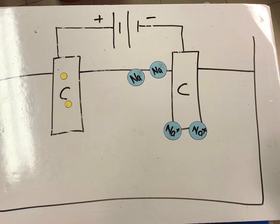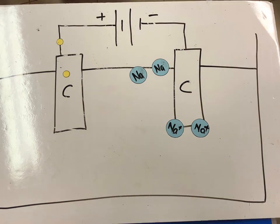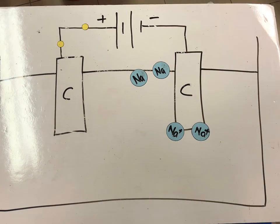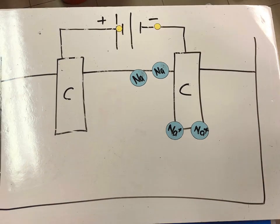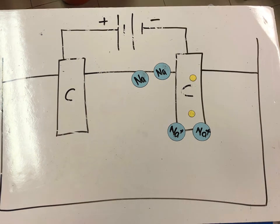Similarly, the electrons will move towards the negative electrode. Again, each sodium cation will gain one electron and be reduced to sodium metal.